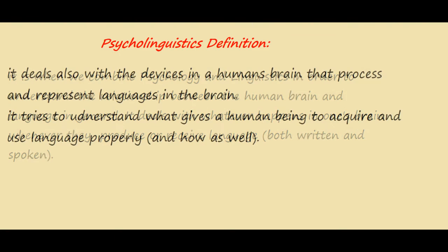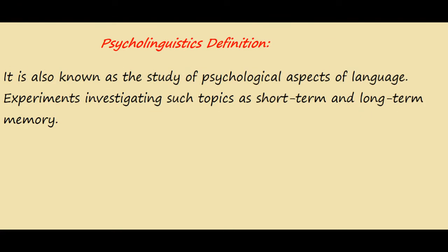It also deals with the devices in the human brain that process and represent language. It tries to understand what gives a human being the ability to acquire and use language properly, and how a human being acquires and uses language. It is also known as the study of the psychological aspects of language, because psycholinguistics deals with the study of the brain as well.